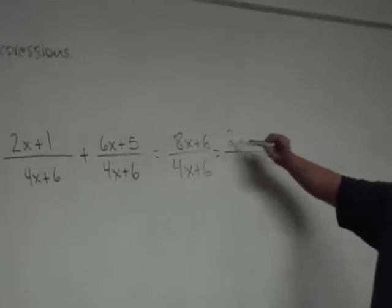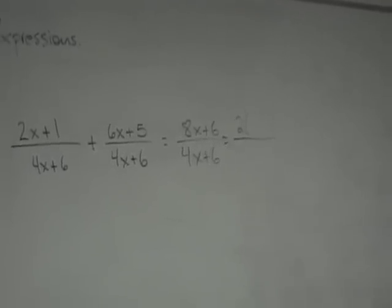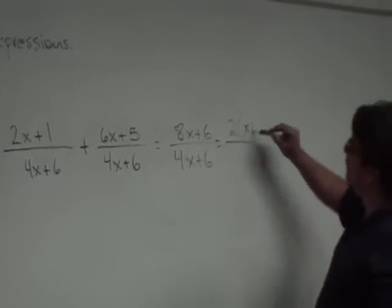There's a common factor 2 that we can pull out. And what do we have? 2 times 4x plus 3. Very nice.